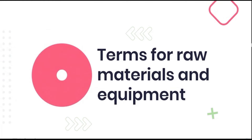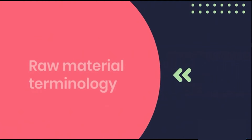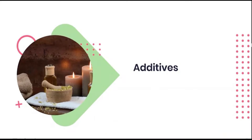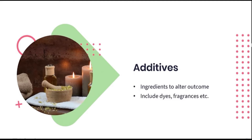Let's now begin looking at how to articulate the terms we use to describe certain raw materials and equipment. Additives are the products or ingredients we add to our melted wax to transform the outcome of the candle. These could potentially include colour dyes, fragrances, or certain other chemicals to prolong the burn time. These additives are how we would achieve results like a coloured candle, for instance.